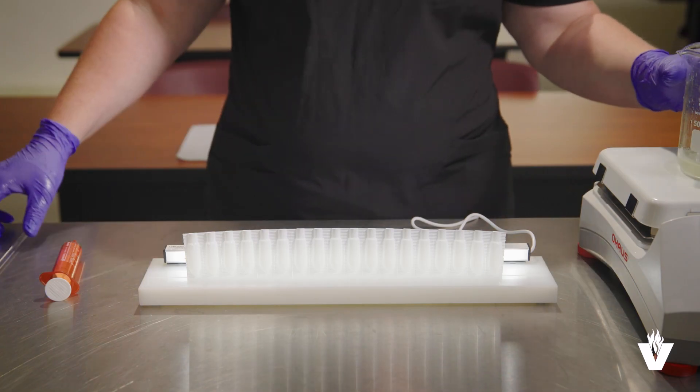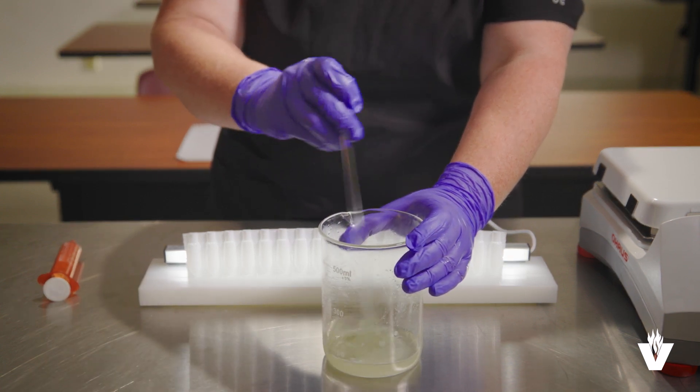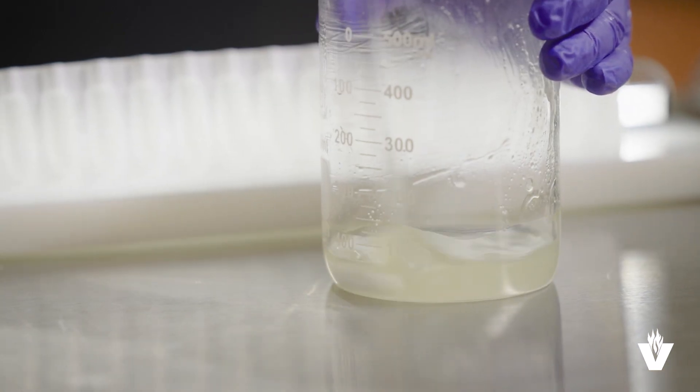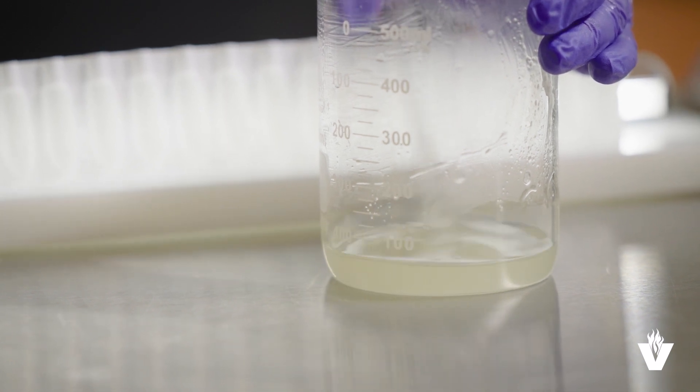Once dissolved, remove it from the hot plate and occasionally stir it with a glass stirrer as it starts to cool down. You must let this cool down so when it is placed into the disposable molds it is not so hot that it melts the mold.